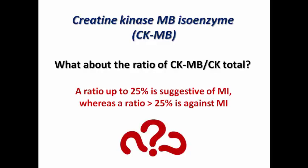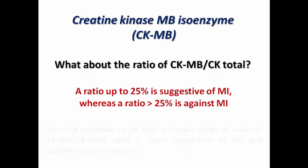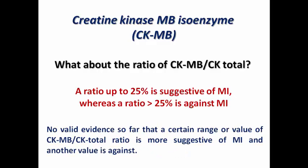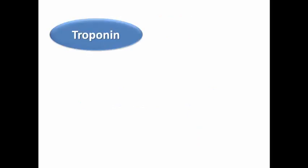Is there any role for the CKMB to CK total ratio in ruling MI in or out? There is no valid evidence that a specific range or value of the CKMB/CK total ratio is more suggestive of MI or against it. Senior colleagues may have observed certain ratios correlate with angiographic findings, but there is no strong evidence to validate a specific ratio above or below which MI is confirmed or excluded. If you want to use a cardiac biomarker to diagnose or exclude MI, please choose troponin.